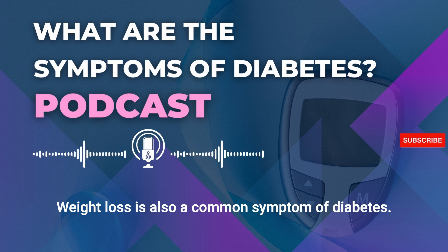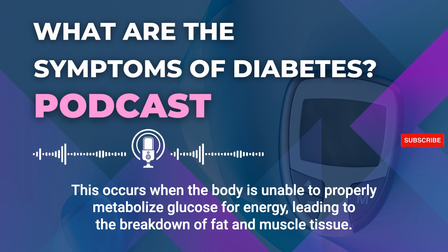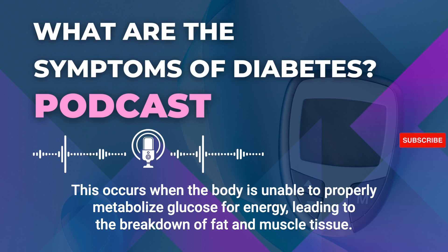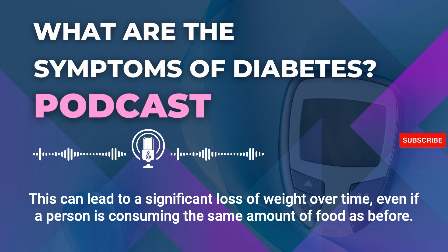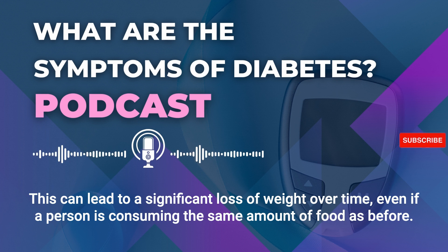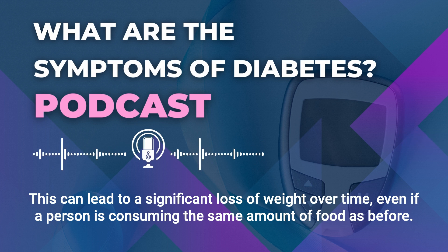Weight loss is also a common symptom of diabetes. This occurs when the body is unable to properly metabolize glucose for energy, leading to the breakdown of fat and muscle tissue. This can lead to a significant loss of weight over time, even if a person is consuming the same amount of food as before.